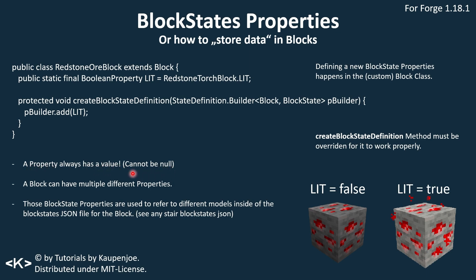As a general summary for block state properties: they always have a value so they can never be null. A block can have multiple different properties — we've seen this with stairs and doors. The values of those block state properties can be referred to in different model files. In the block states JSON file, different block model files are referenced depending on the values of the block state properties. In the redstone ore example, lit=false gives one model and lit=true lights it up — we can change the appearance of the block based on the block state property.